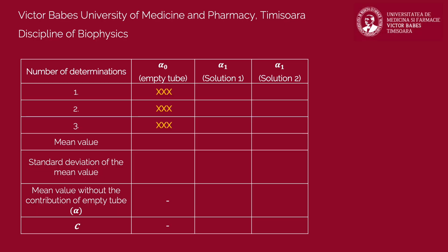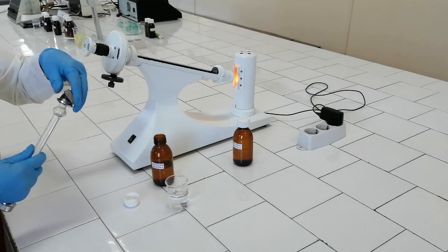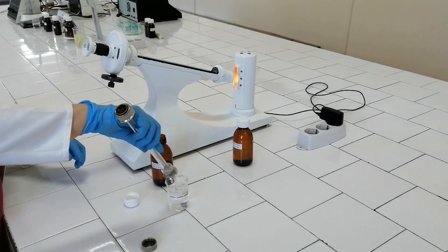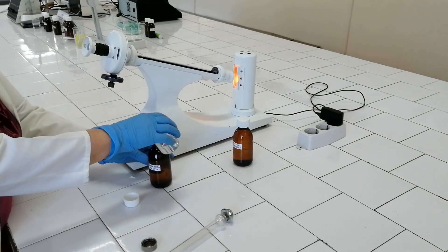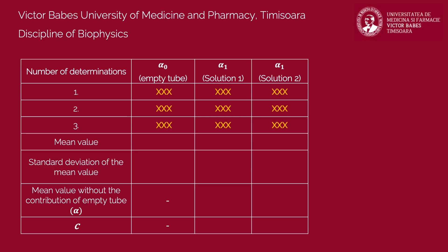Read the rotation angles for each solution three times and record the obtained values in the table. After each measurement, pour back the solution in its own container and rinse the interior of the tube with distilled water. Then, calculate the mean values of the rotation angles and their corresponding standard errors.